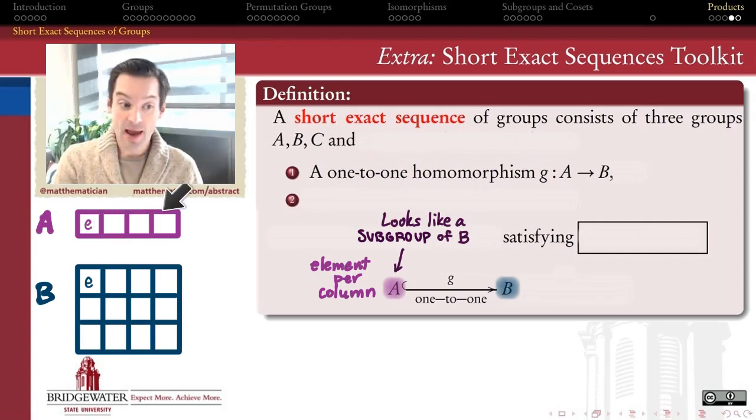So for example, if my A had four elements in it, then the image of A inside of B should also have four elements in it, if it's a one-to-one function.